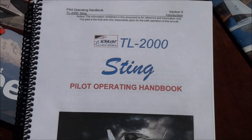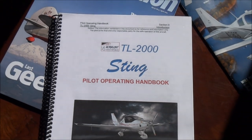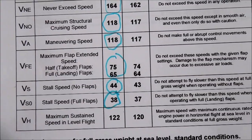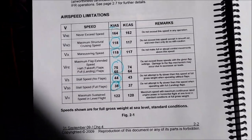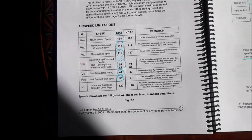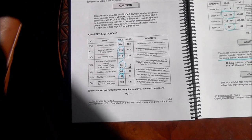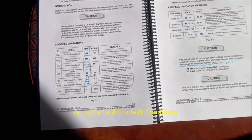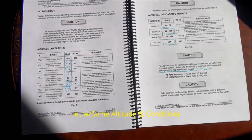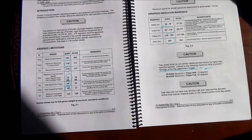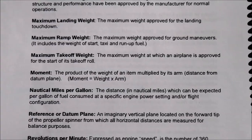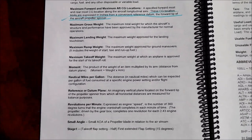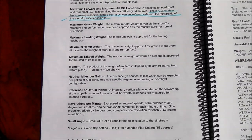Stalling speeds in the POH are based on sea level, standard conditions, and maximum gross weight. At lower weight, stall speeds are lower. Having a handle on gross weight for every takeoff and landing is step one in judging stalling risk.